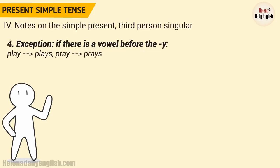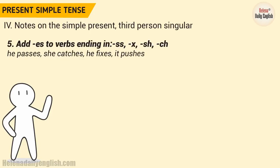4. Exception: if there is a vowel before the Y, just add -s. Play → plays, pray → prays. 5. Add -ES to verbs ending in -SS, -X, -SH, -CH. Example: He passes, she catches, he fixes, it pushes.